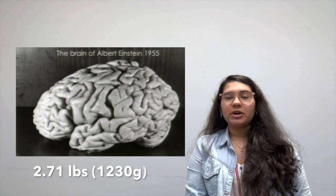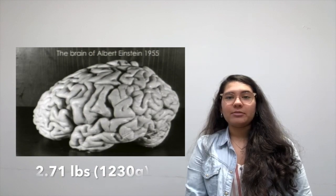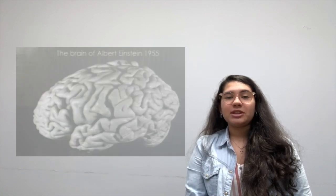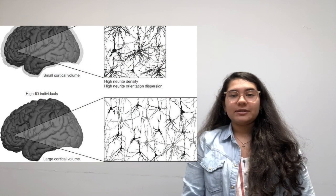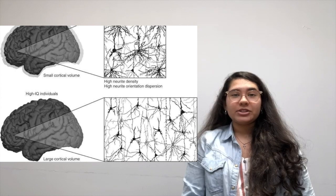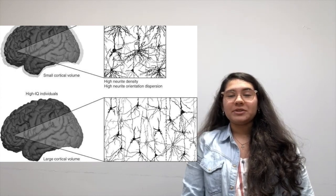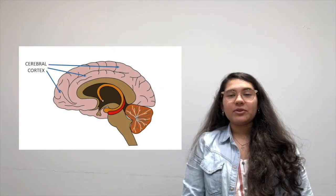Fact number two. Although it may seem that the bigger your brain, the smarter you are, this is not necessarily true. In fact, Albert Einstein's brain weighed 2.71 pounds or 1,230 grams, which is 10% smaller than the average 3 pounds or 1,400 grams. However, the neuron density of his brain was much higher than average, and his cerebral cortex was found to be increasingly different from that of a person of average intelligence.